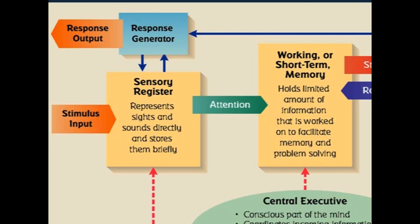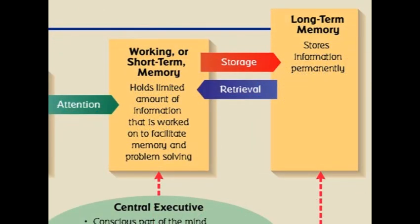Lots of information comes into our brains from the world, such as things that we can see and things that we can hear. But we actually have to pay attention to certain things if they are going to be transferred into working memory, which used to be called short-term memory. Working memory has a very limited capacity, so if we want to remember something, it has to be transferred into long-term memory through encoding and storage. And then if we want to remember that piece of information, at some point we will need to retrieve it from long-term memory back into our working memory.